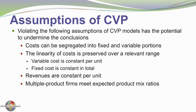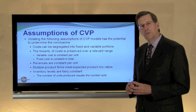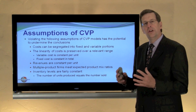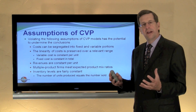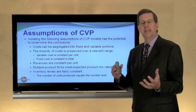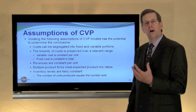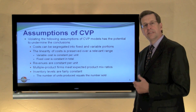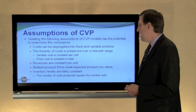Another assumption: multiple product firms need to sell in proportion to what is anticipated. Remember, in multiple product firms we defined a unit as a product mix of multiple products — for example, one bird feeder and ten packets of nectar. If we violate that ratio then the analysis and the break-even point that we calculate will be invalid.